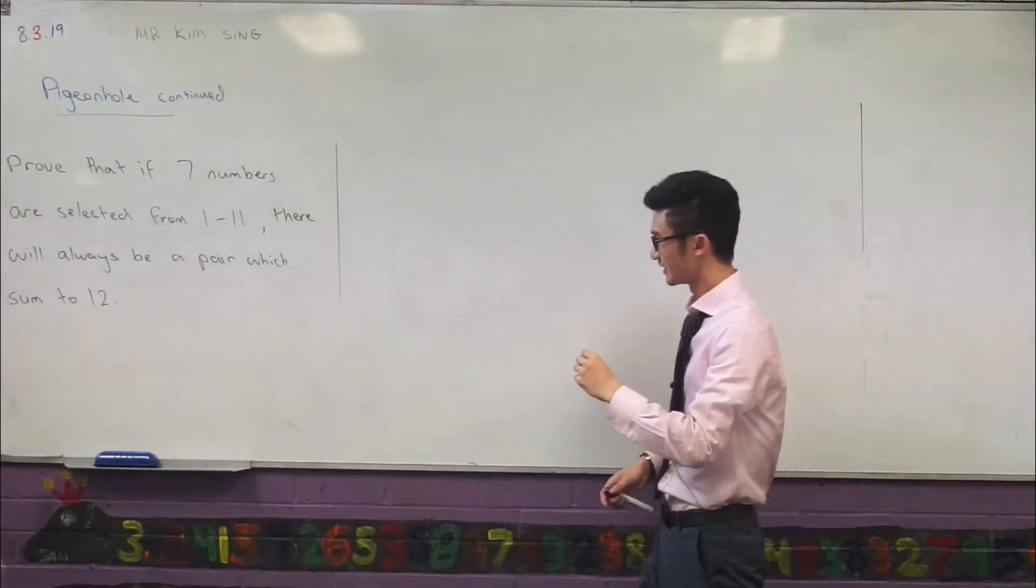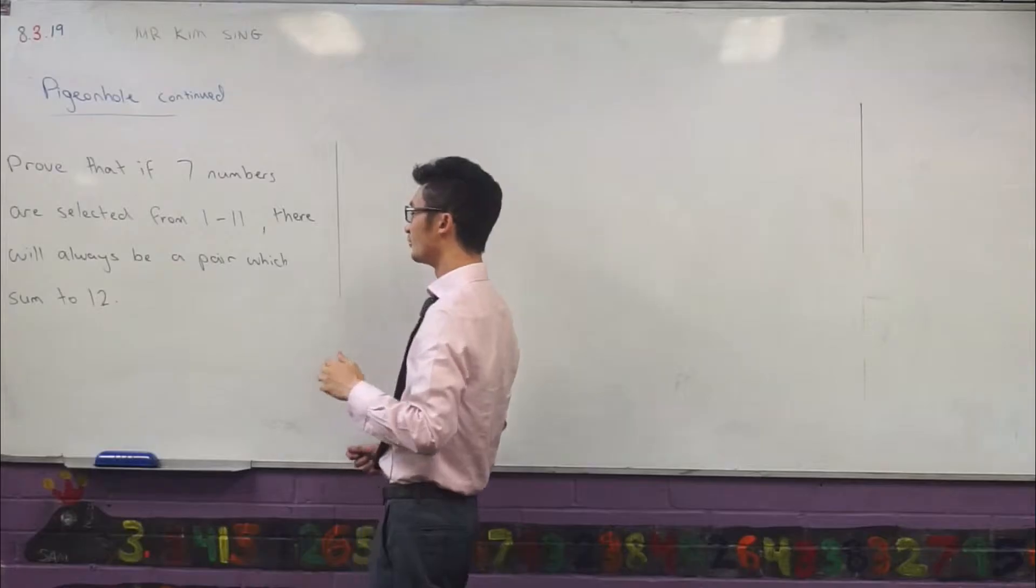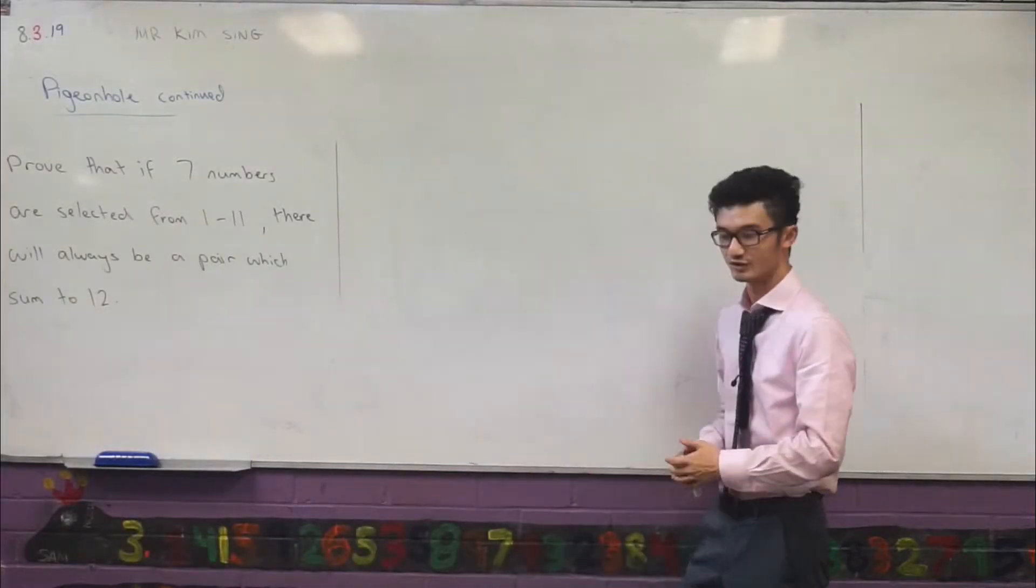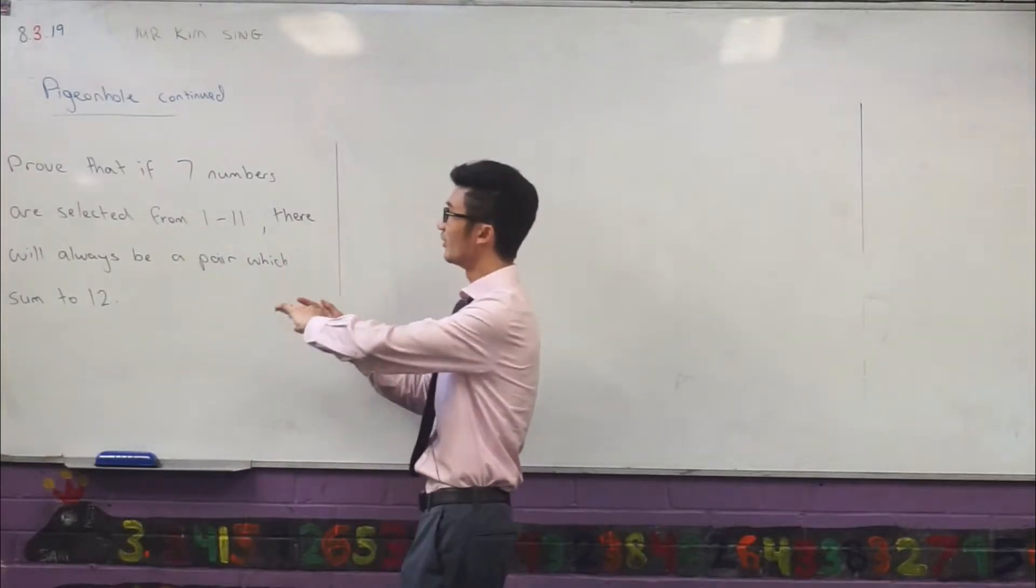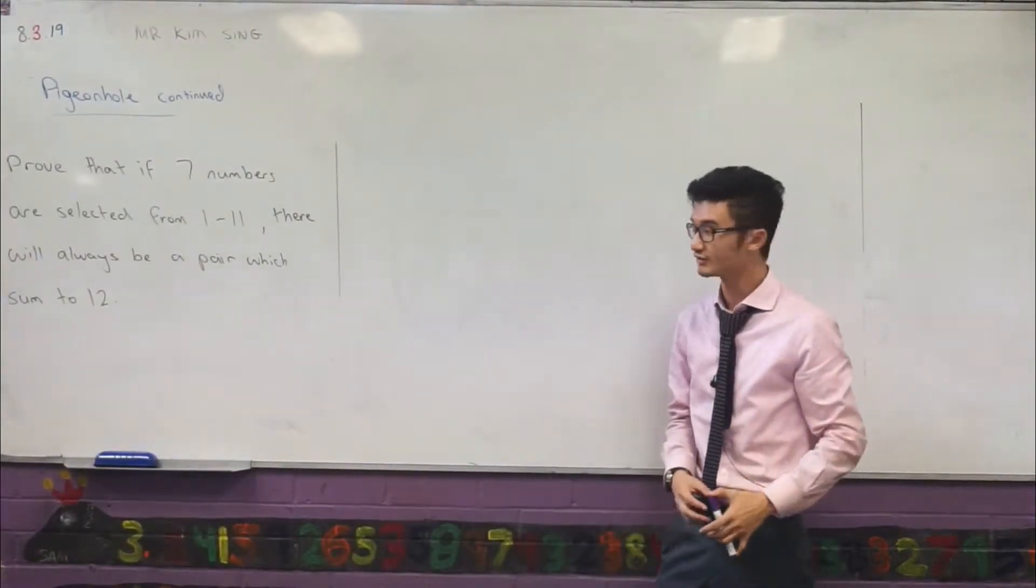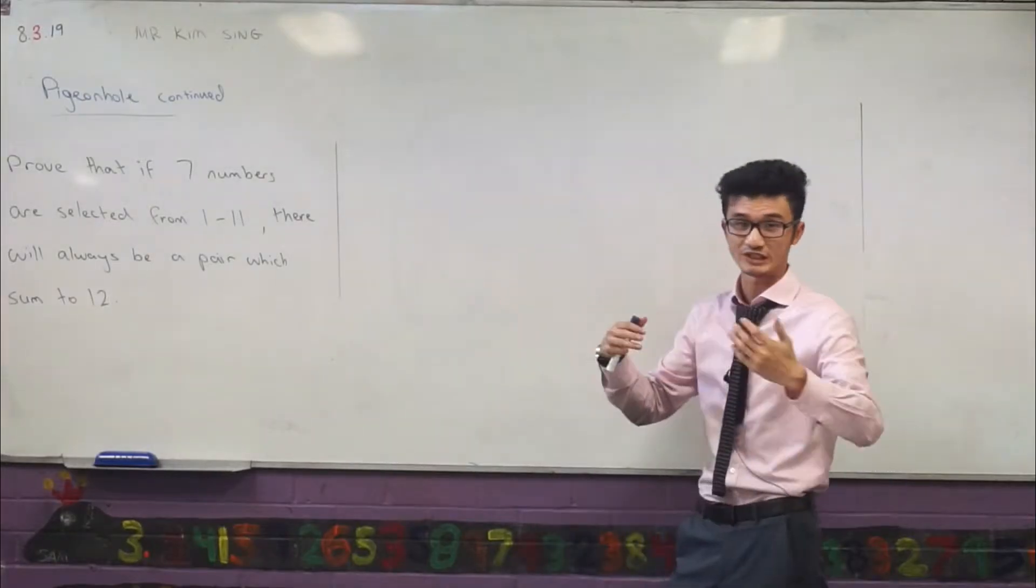We want to prove that if seven numbers are selected from 1 to 11, there will always be a pair which sums to 12. And before we even jump into the proof of this question, sometimes it's good to just get an intuition of what's actually happening here.